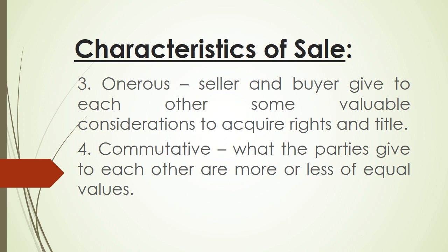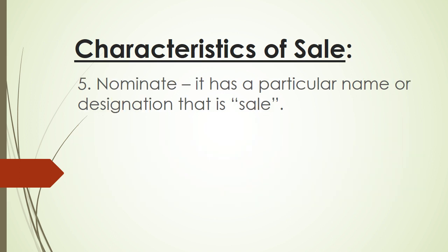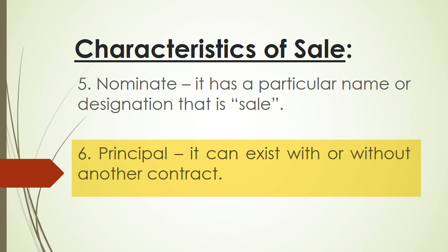The fourth characteristic is that sale is also commutative, in the sense that what the parties give to each other are more or less of equal values. Also, since the contract has a particular name — which is 'sale' — it is considered to be a nominate contract. Finally, because sale can exist with or without another contract, sale also has the character of a principal contract. Thank you for listening and watching. Have a good day.